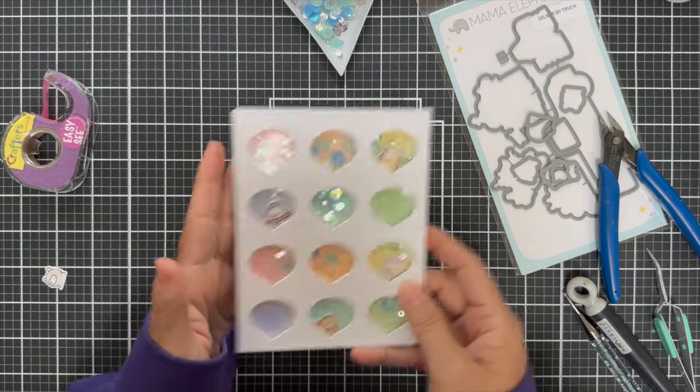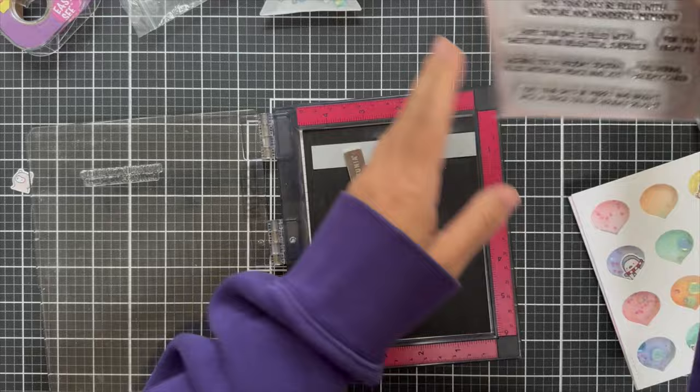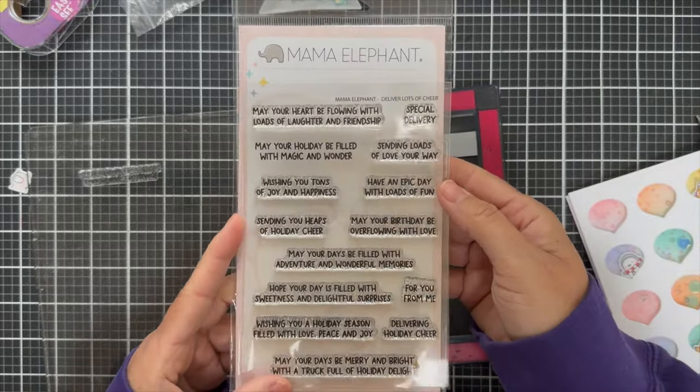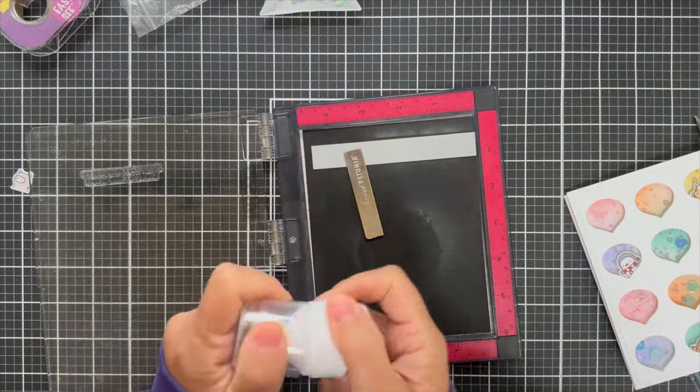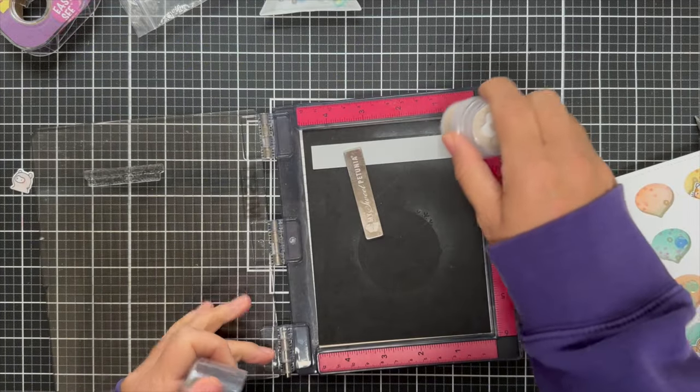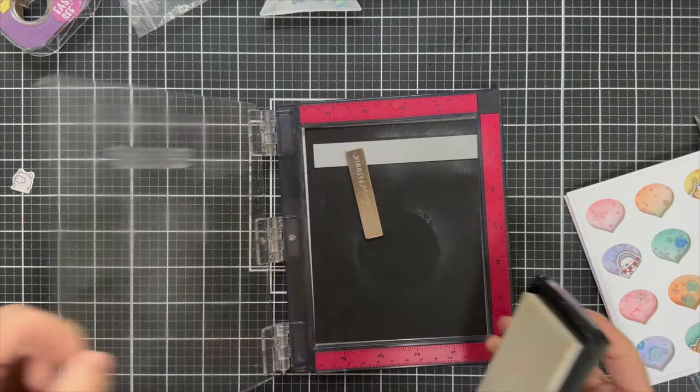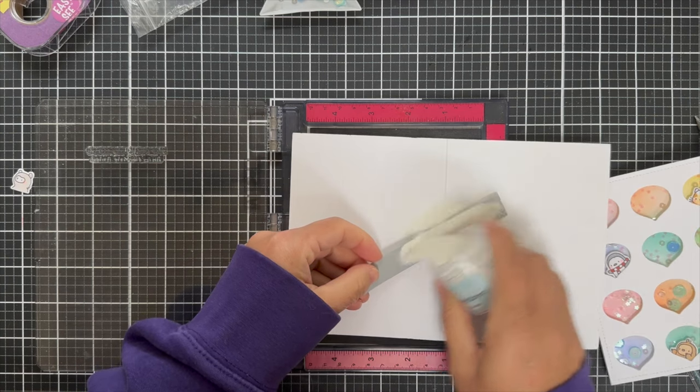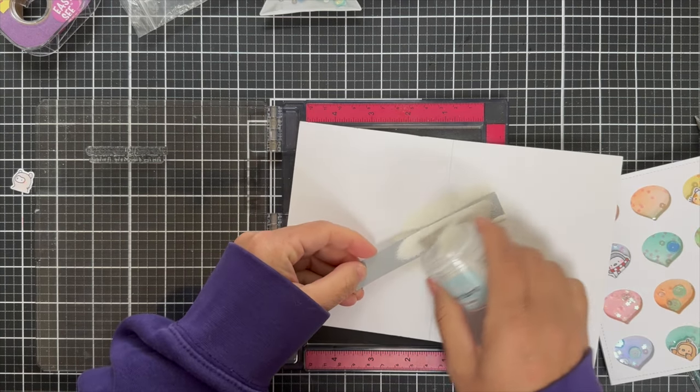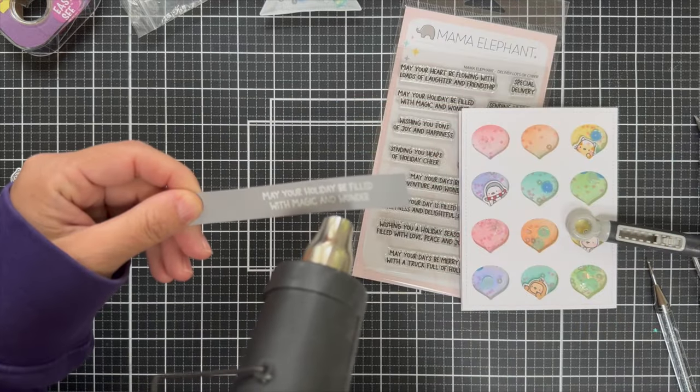And I mean, I got to tell you, this one melts my mama elephant loving heart, but we're going to add a sentiment using the deliver lots of cheer. And I'm just going to emboss the sentiment in white on a strip of gray cardstock. So first I prep it with a powder tool, ink up my sentiment with VersaMark ink. And then I'll pour on some white embossing powder, heat that with a heat gun, trim it out to a thin little sentiment strip and pop it up right in the center of the card.